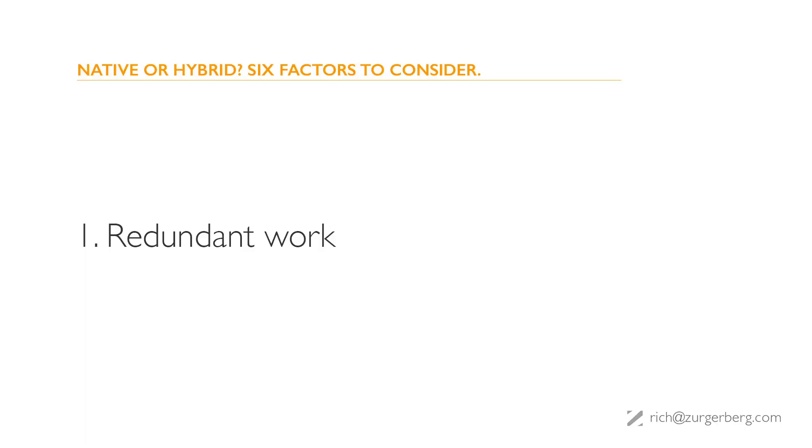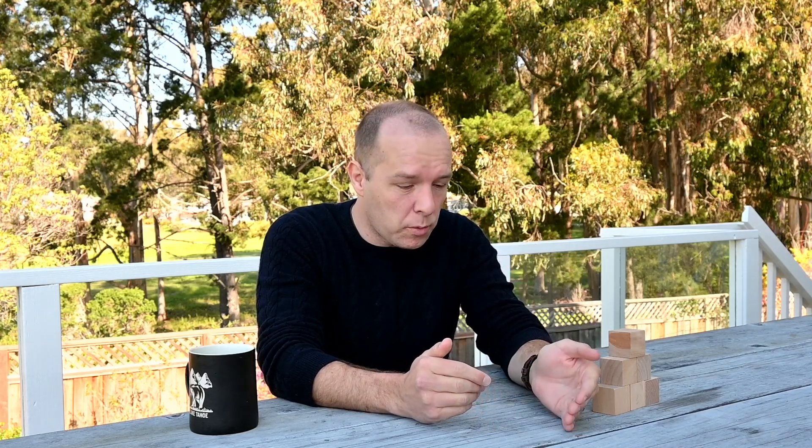Factor one: redundant work. The challenge with building native apps is that if you want to maximize your user base, you need two apps — one for iOS, one for Android. This adds logistical overhead trying to keep your apps in sync, and it leads to redundant work building the same features on two platforms. This is the key problem hybrid frameworks try to solve. They do this very well under certain conditions and worse under others.